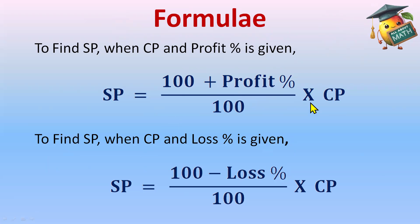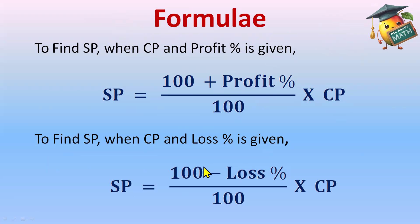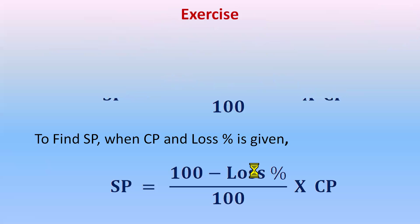The formulas are very simple to remember. When finding the cost price, we take the reciprocal of this — we'll cover that further. Here, profit will be added to 100 in the numerator, and when loss percent is given, it will be subtracted from 100 in the numerator. So remember the formula, and let's do the exercises.